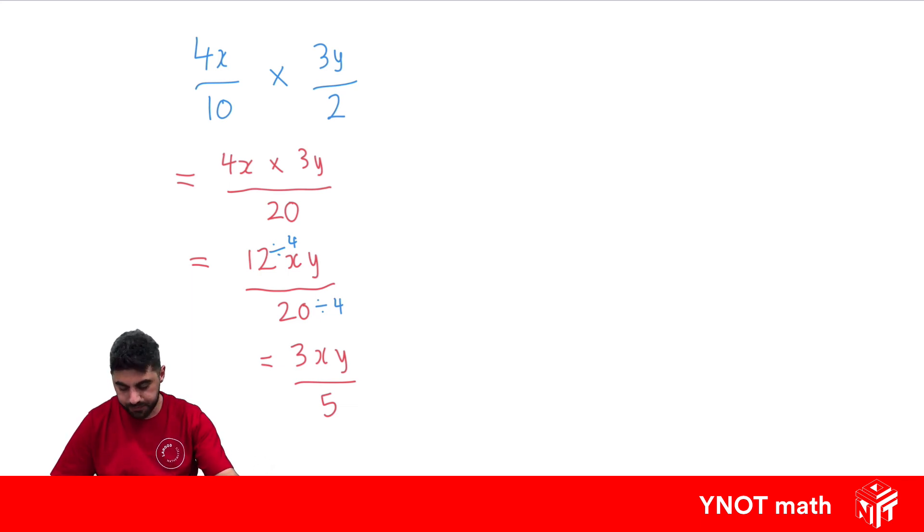Let's look at one more. x over 4 divided by 15y over 2. Remember, when we divide fractions, we keep the first fraction the same. We flip the second fraction and we change the division sign to a multiplication sign. And now we can just multiply two fractions like we normally would. So numerator times numerator over denominator times denominator.